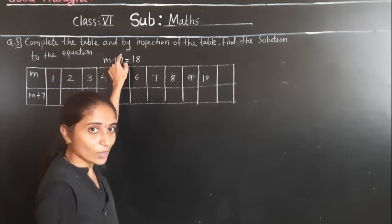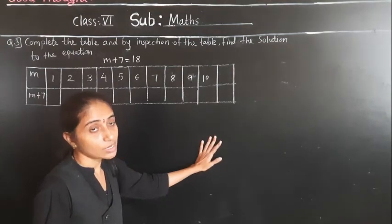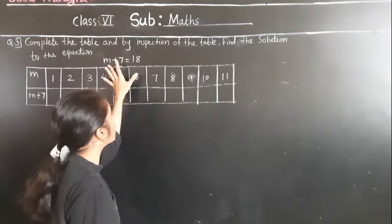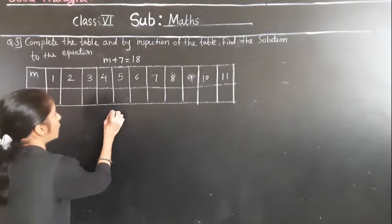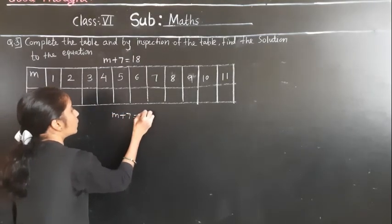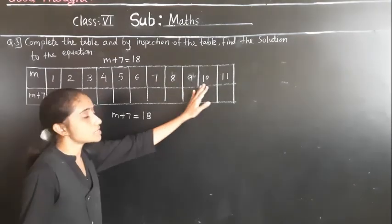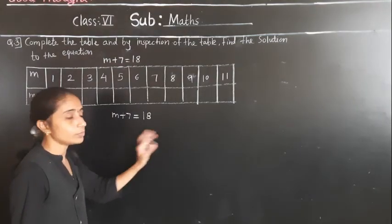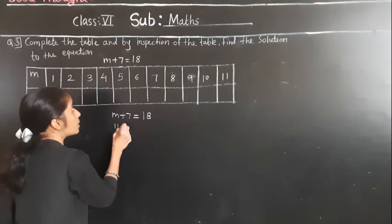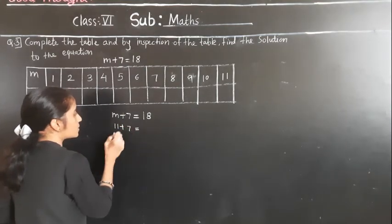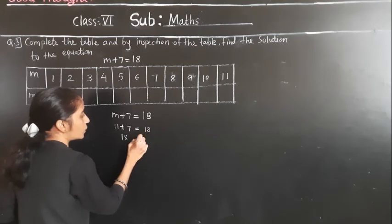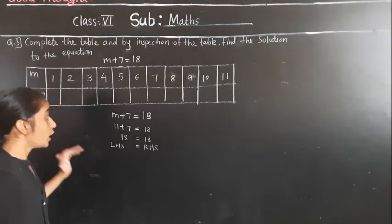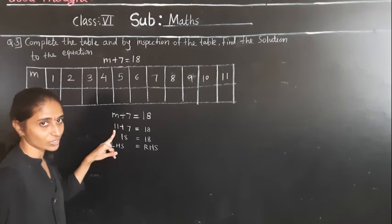With which number? 11 plus 7. By observing only, if M is equal to 11, then we get left hand side equal to right hand side. In the equation M plus 7 equal to 18, if we put 11, then 11 plus 7 is 18. So 18 is equal to 18 — LHS is equal to RHS. So M is equal to 11 is the solution of the given equation.